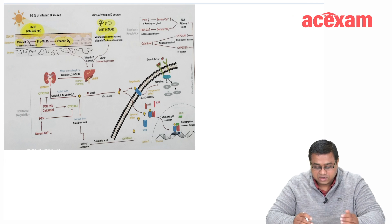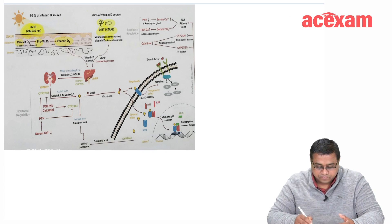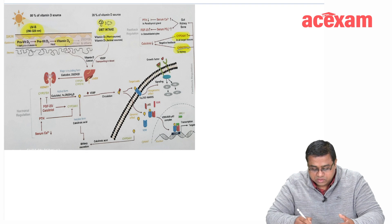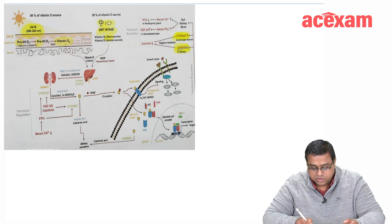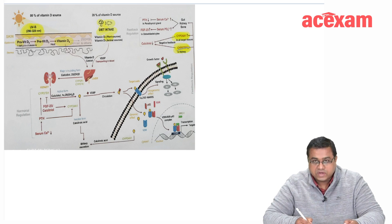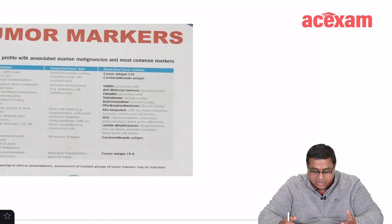Key points to remember for vitamin D: it has a nuclear receptor, UVB is required, and the source includes both animal (fish) and plant sources. Cytochromes 24A1 and 27B1 regulate activation and degradation. Low calcitriol reduces negative feedback on cytochrome 24A1 (decreasing degradation) and positively stimulates 27B1 (increasing activation of calcitriol) — a feedback regulatory mechanism.